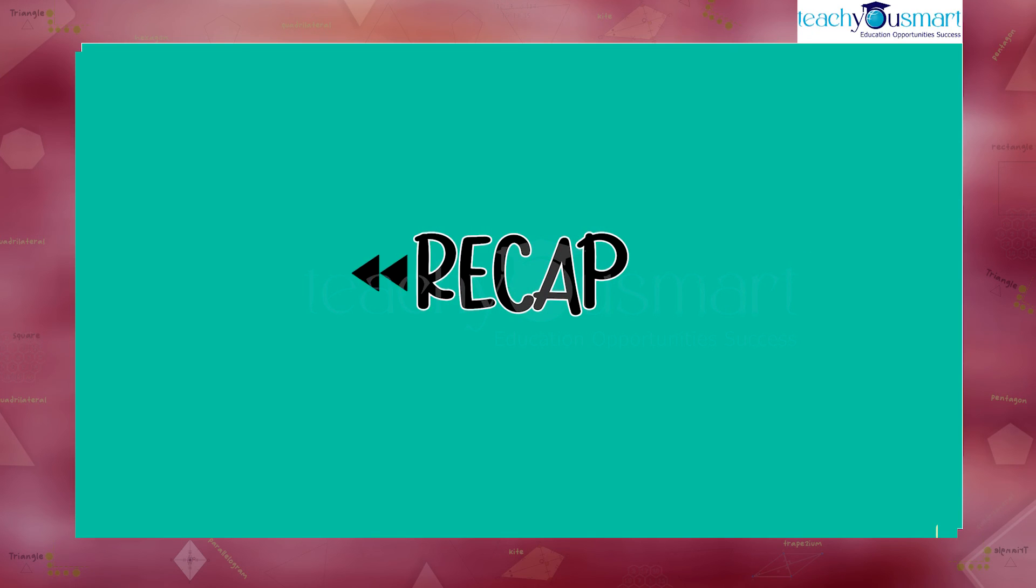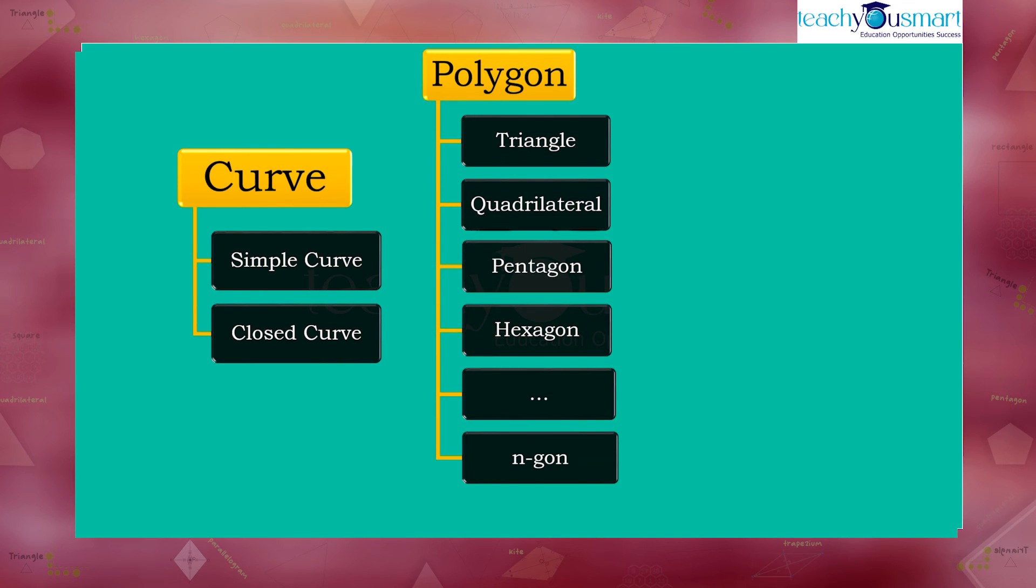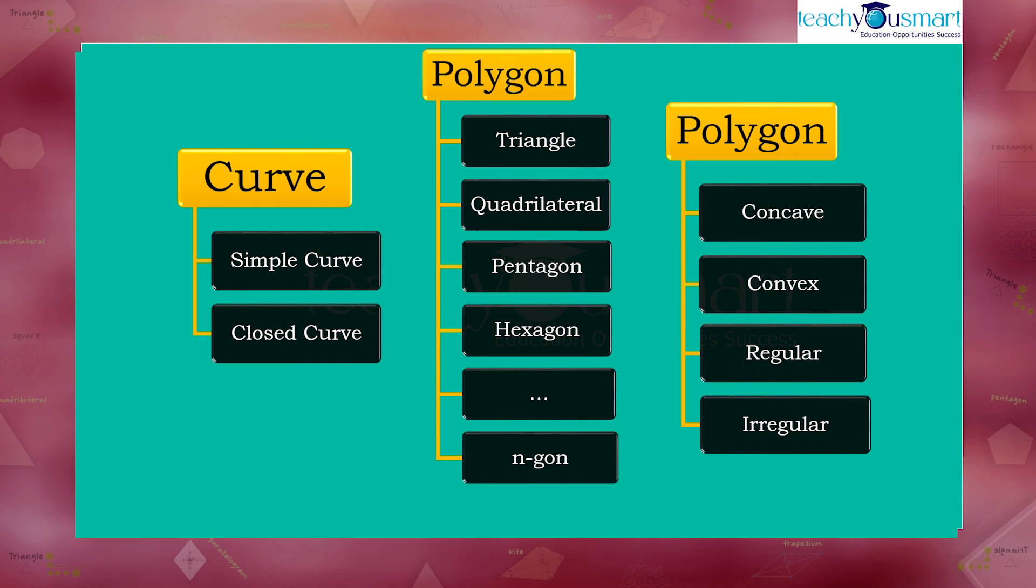Let's have a quick revision. Today we saw what is a curve and the types of curves, then we went through polygons, their classification depending on the number of sides, and measures of angles and sides.